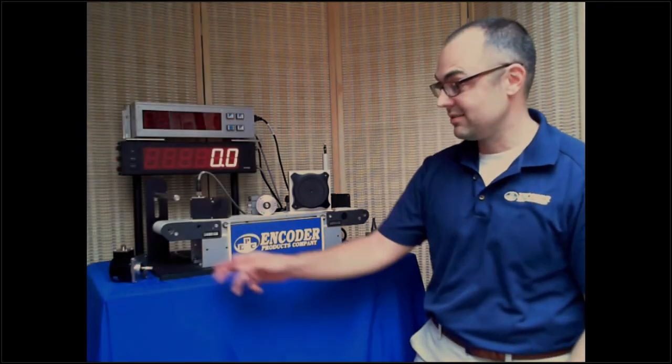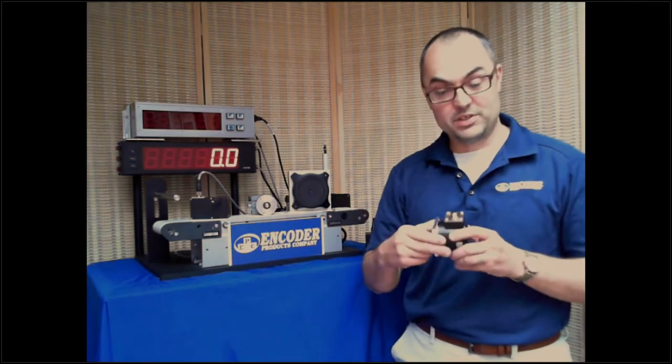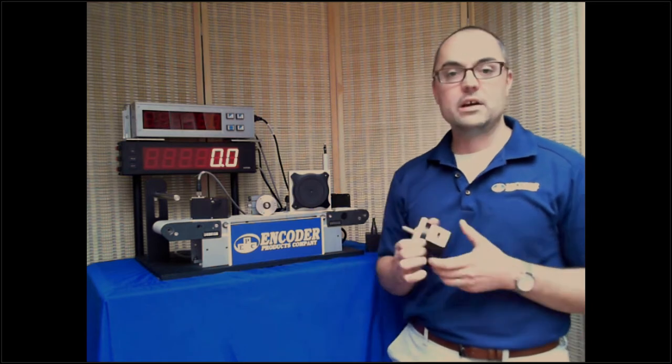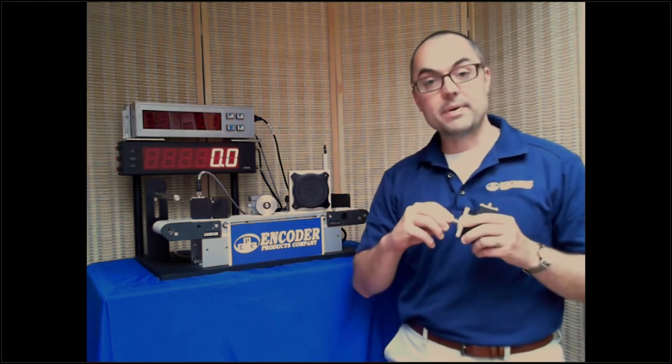What is an encoder in general? An encoder is a device, specifically a rotary encoder, that allows you to get position or speed or measure a distance, and it does that by rotating.